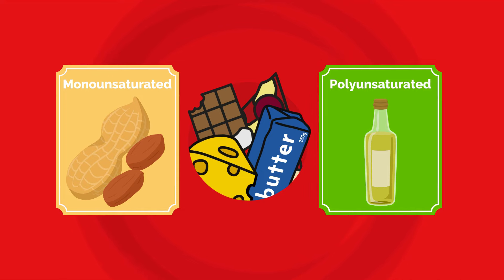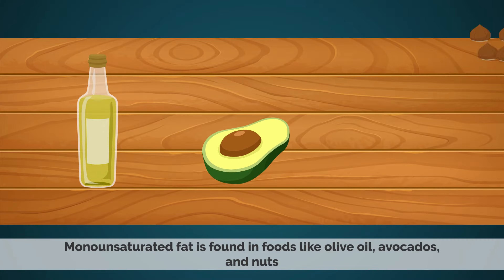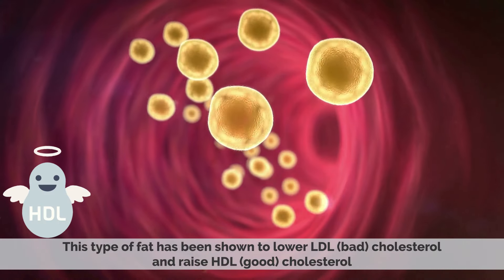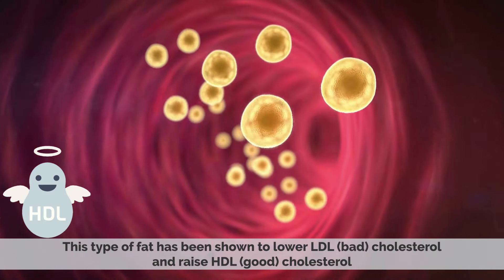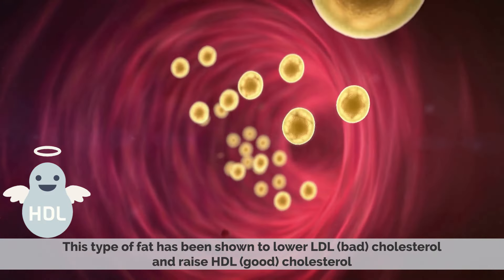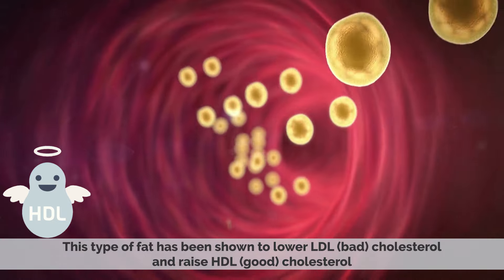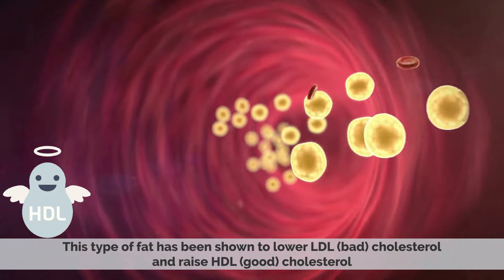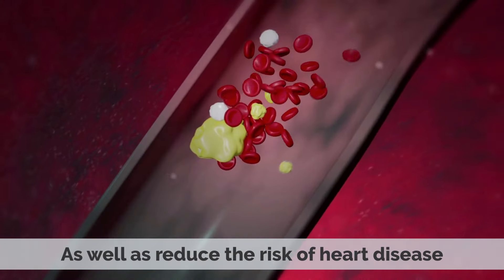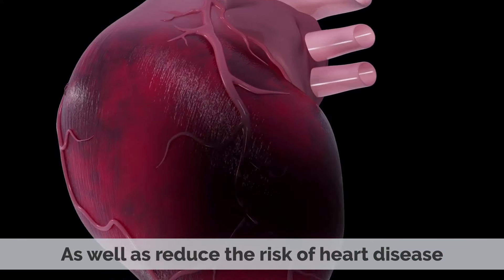There are two main types of unsaturated fat: monounsaturated and polyunsaturated. Monounsaturated fat is found in foods like olive oil, avocado, and nuts. This type of fat has been shown to lower LDL (bad cholesterol) and raise HDL (good cholesterol), as well as reduce the risk of heart disease.